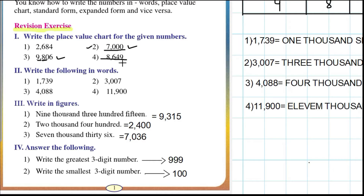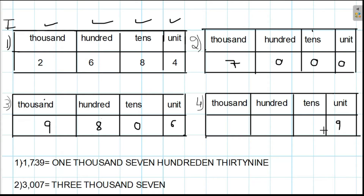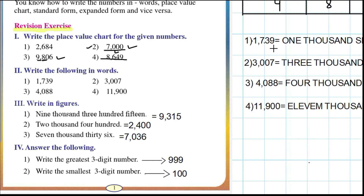Fourth problem: eight thousand six hundred and forty-nine. Nine in the place of units, four in the place of tens, six in the place of hundreds, and eight in the place of thousands — eight thousand six hundred and forty-nine. Understood?